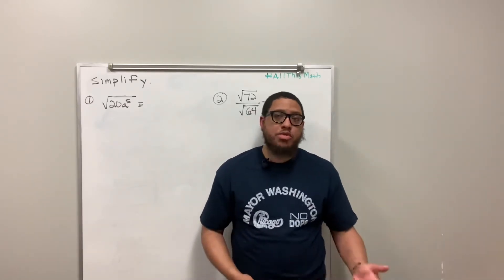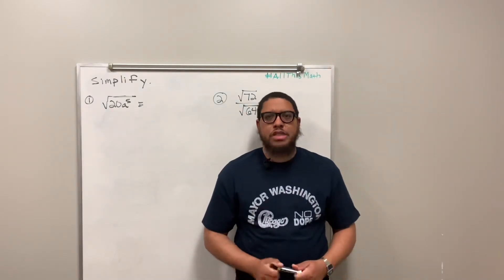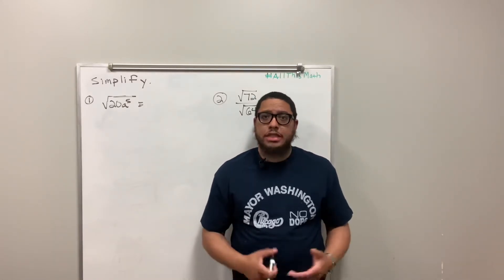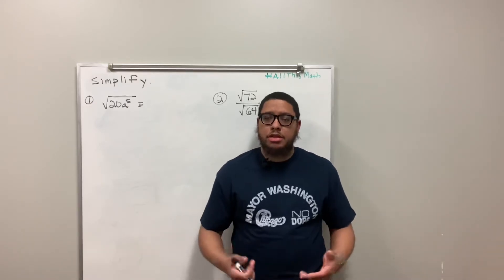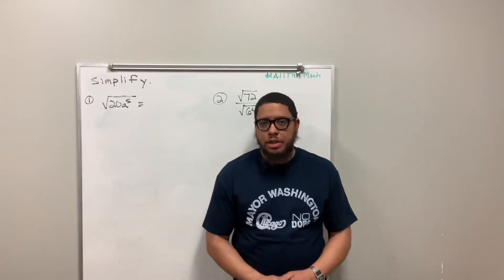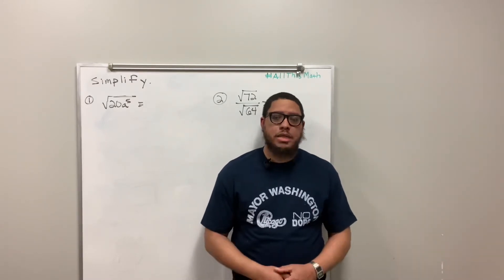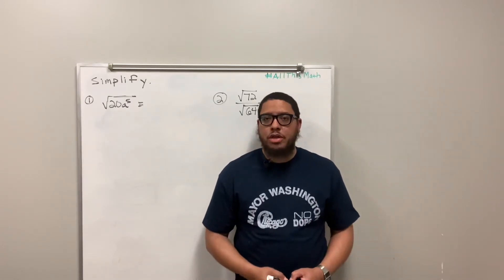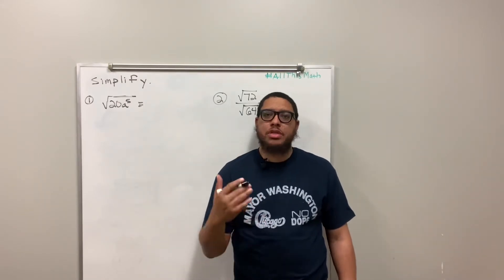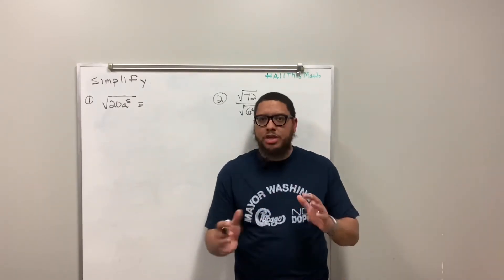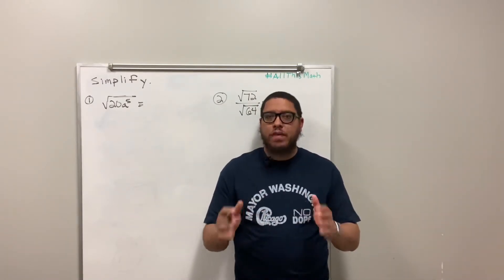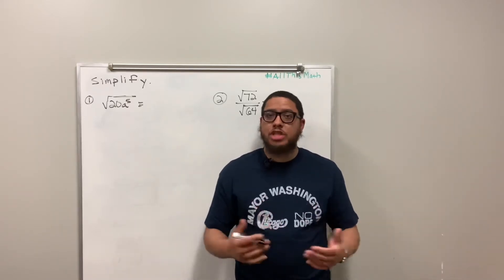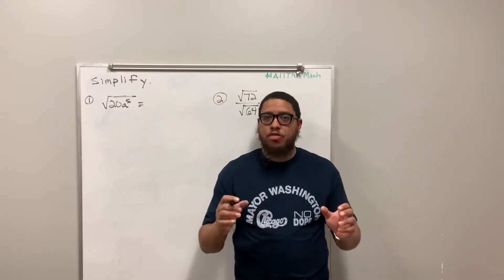Let me give you another example. Think about 36. What happens if I do 6 times 6? Six is a whole number and 6 multiplied by itself gives me 36. Thus, 36 is an example of a perfect square. Just like 49 — 49 is a perfect square because 7 times 7 gives me 49. Whenever you can take a whole number and multiply it by itself, the product you end up with is considered a perfect square.